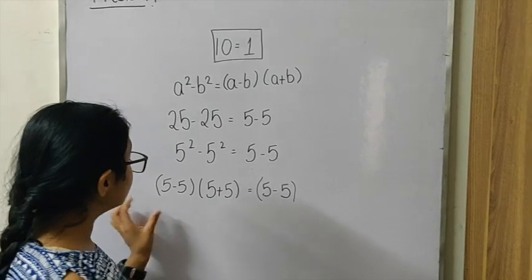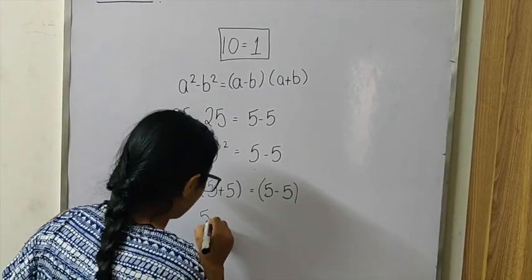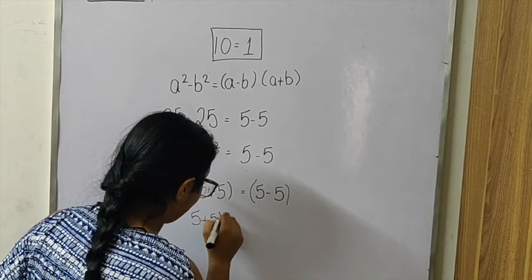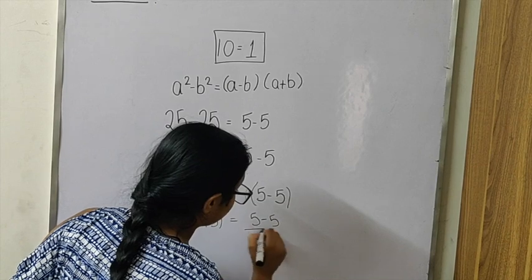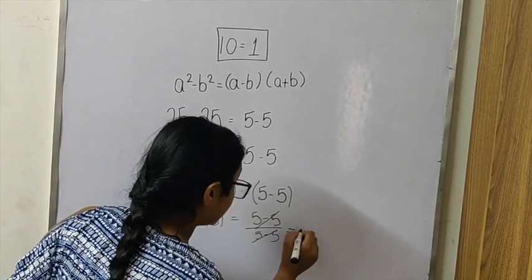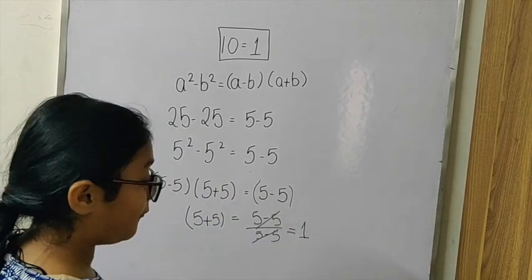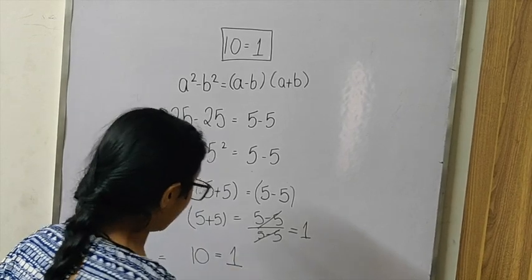Now what we will do is shift this number here, since they both seem to be the same and can be cancelled out. What will remain here is 5 plus 5. They both will get cancelled and will result to 1. Now what we have left is 5 plus 5, which proves that 10 is equal to 1.